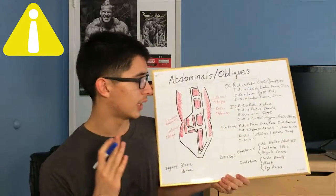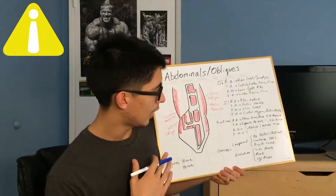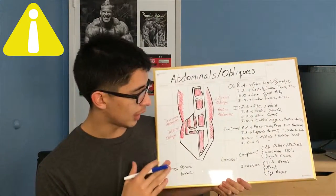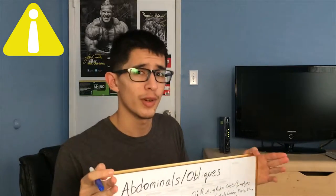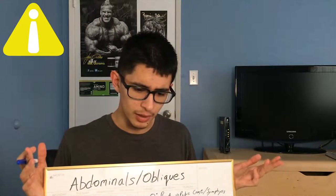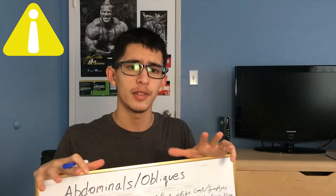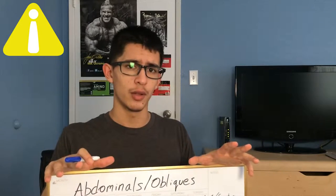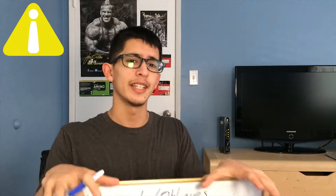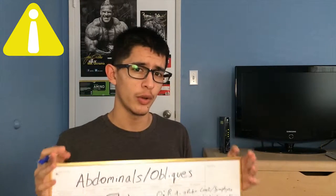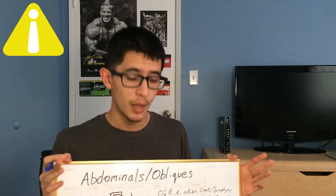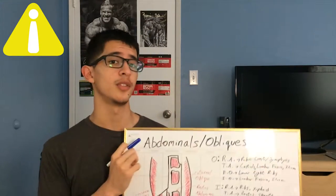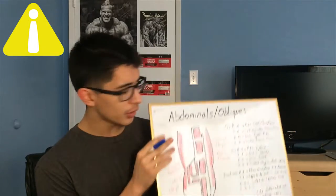For exercises — compound: ab rollers or ab rollouts, landmine 180s, and bicycle crunches. For isolation: side bends, planks, and leg raises. You can't necessarily isolate the abs entirely, since the hip flexors carry on a similar motion as the rectus abdominis. When you're doing hanging knee raises, you're not only working your abs but also your hip flexors. Since the abs are the weaker muscle, you are getting more work out of them, but you can't fully isolate the abs.